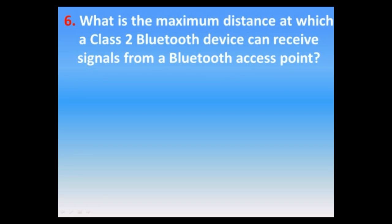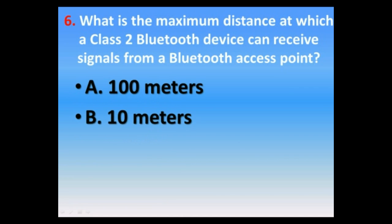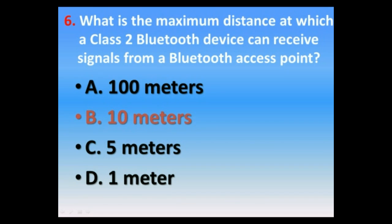Question number six. What is the maximum distance at which a class 2 Bluetooth device can receive signal from a Bluetooth access point? A. 100 meters, B. 10 meters, C. 5 meters, D. 1 meter. The correct answer is B. 10 meters.